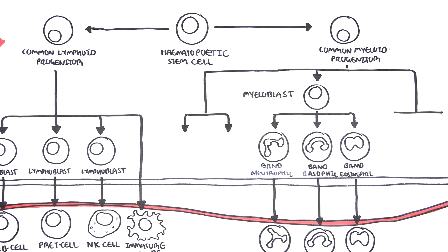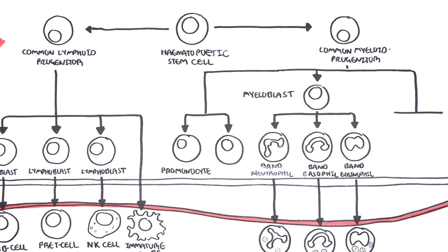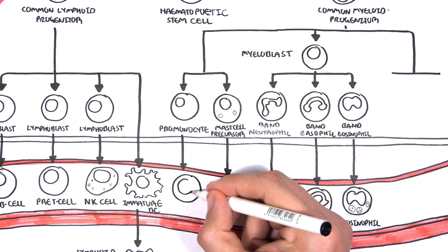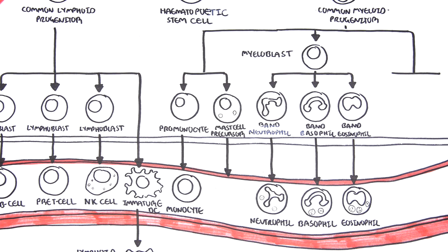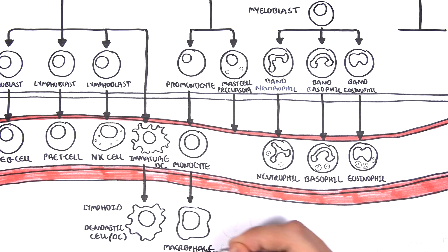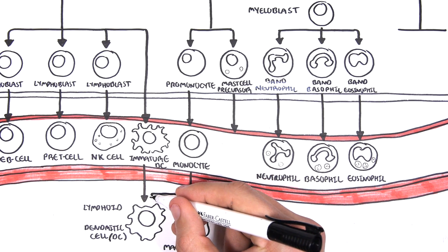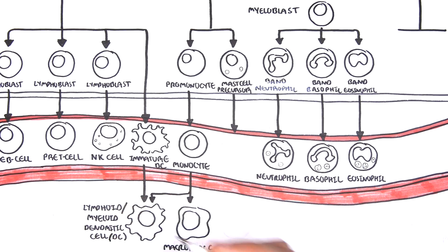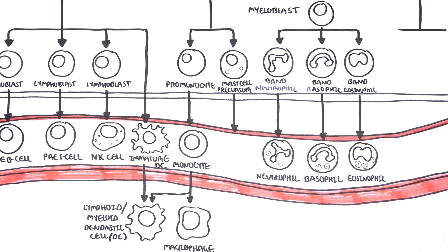The common myeloid progenitor cells can also differentiate and become pro-monocytes and mast cell precursors. Pro-monocytes mature and become monocytes — essentially circulating macrophages. Once they move into a tissue such as the skin, they become tissue macrophages, which are antigen-presenting cells important in connecting the innate and adaptive immune systems. Monocytes or pro-monocytes can also become dendritic cells; if they do so in the tissue, they are referred to as myeloid dendritic cells. So we have two important antigen-presenting cells: the macrophage and the dendritic cell.